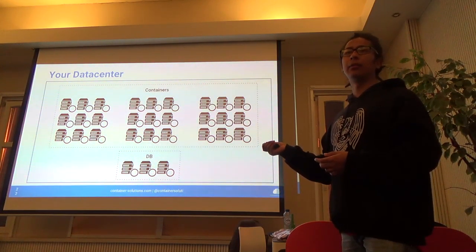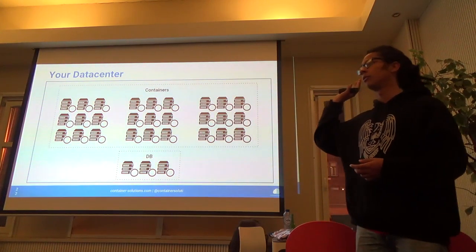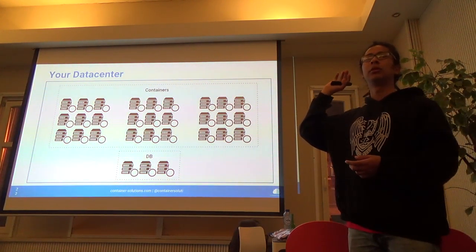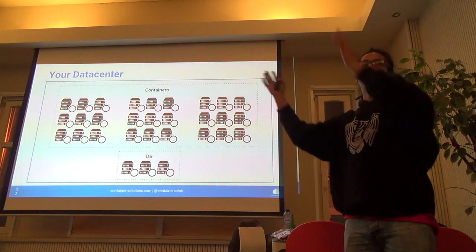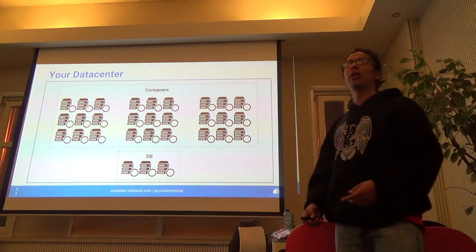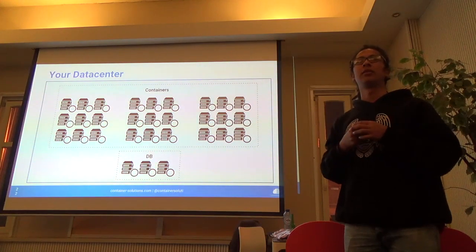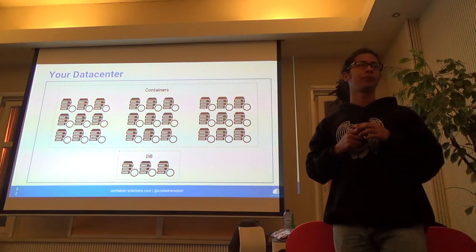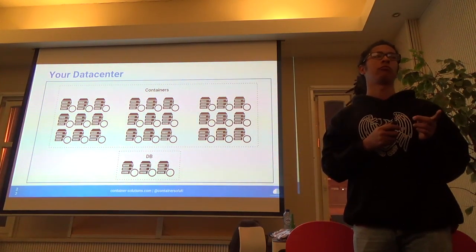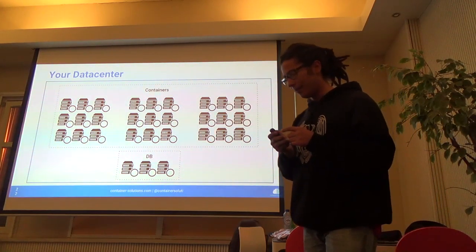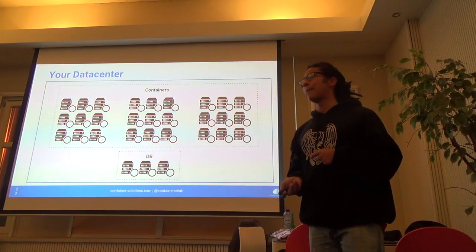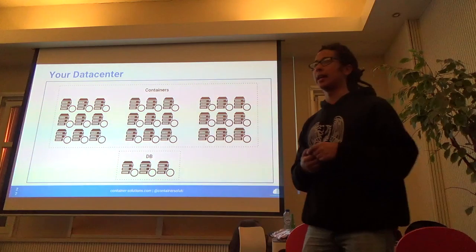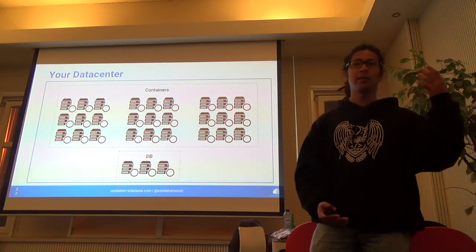Can anybody give me an example of how they're deploying to production? Docker Swarm might be the answer, but what I've seen so far is people using stuff like Chef, Puppet, Capistrano, Mina, Ansible. They create a unit file for systemd.